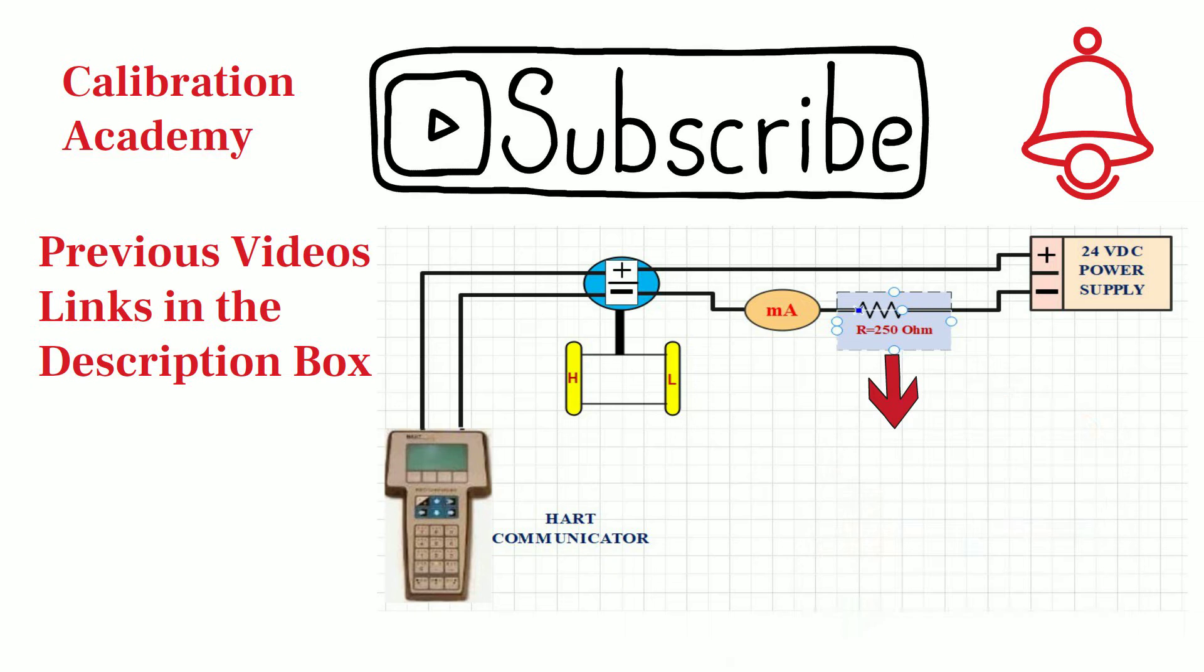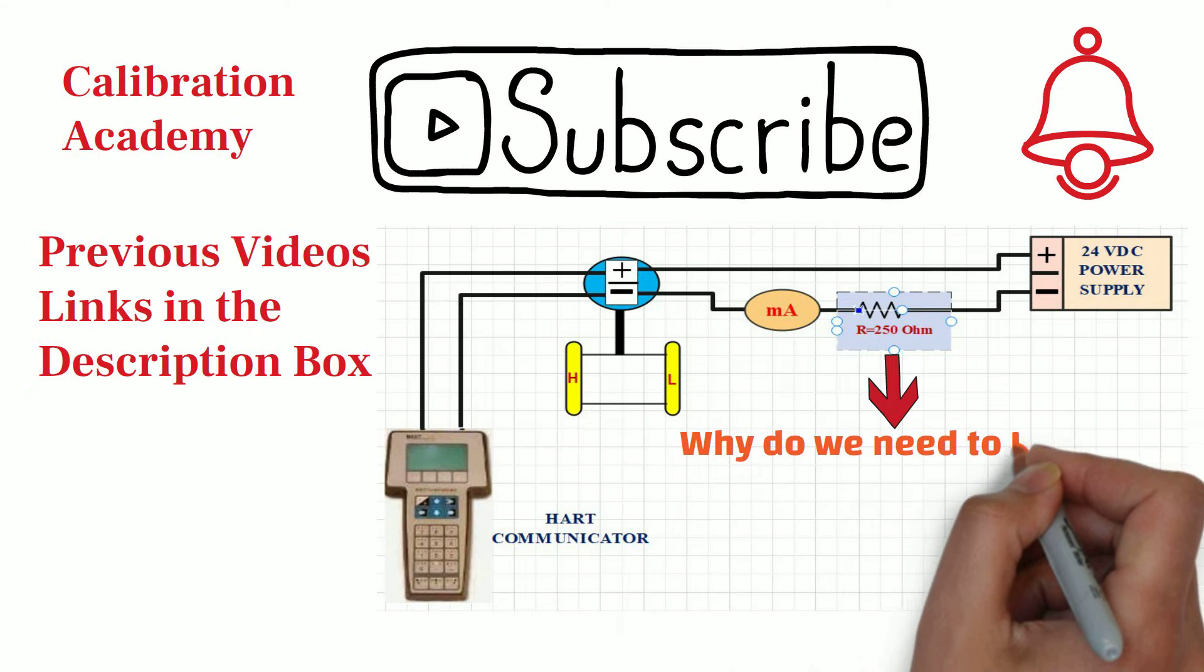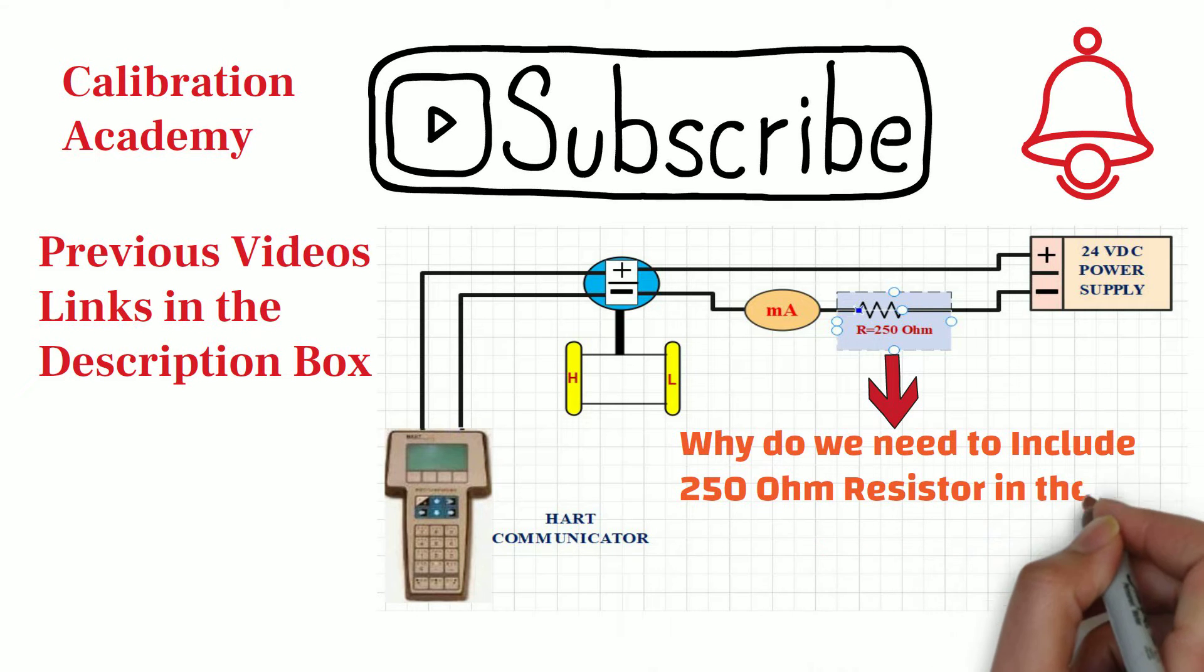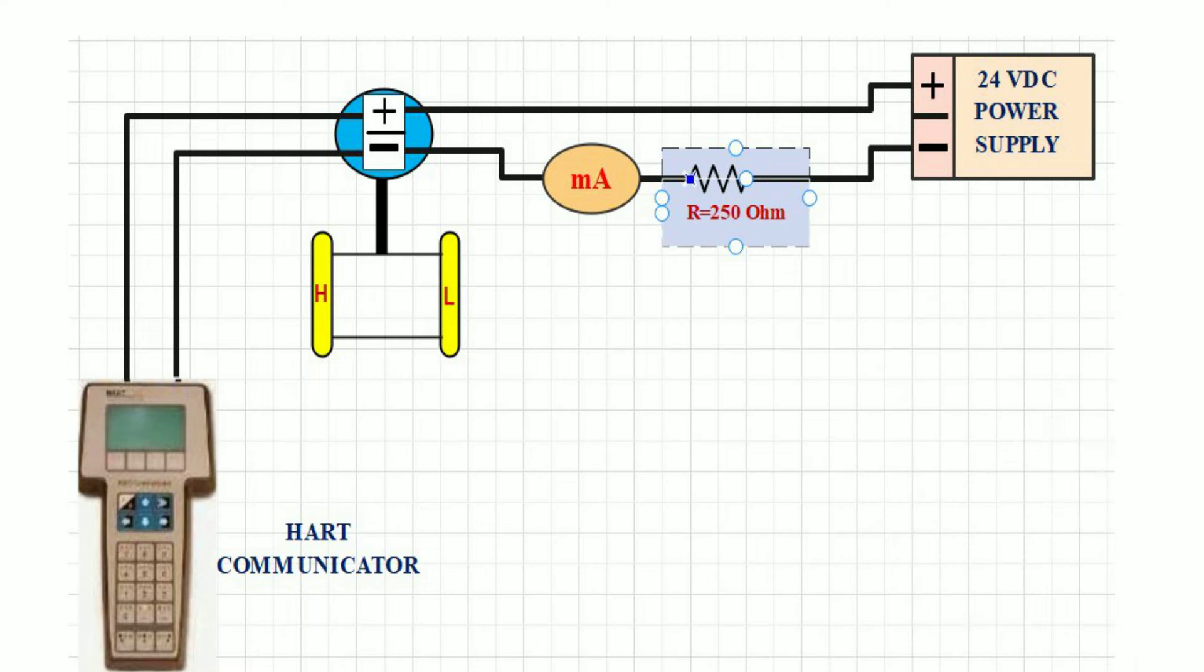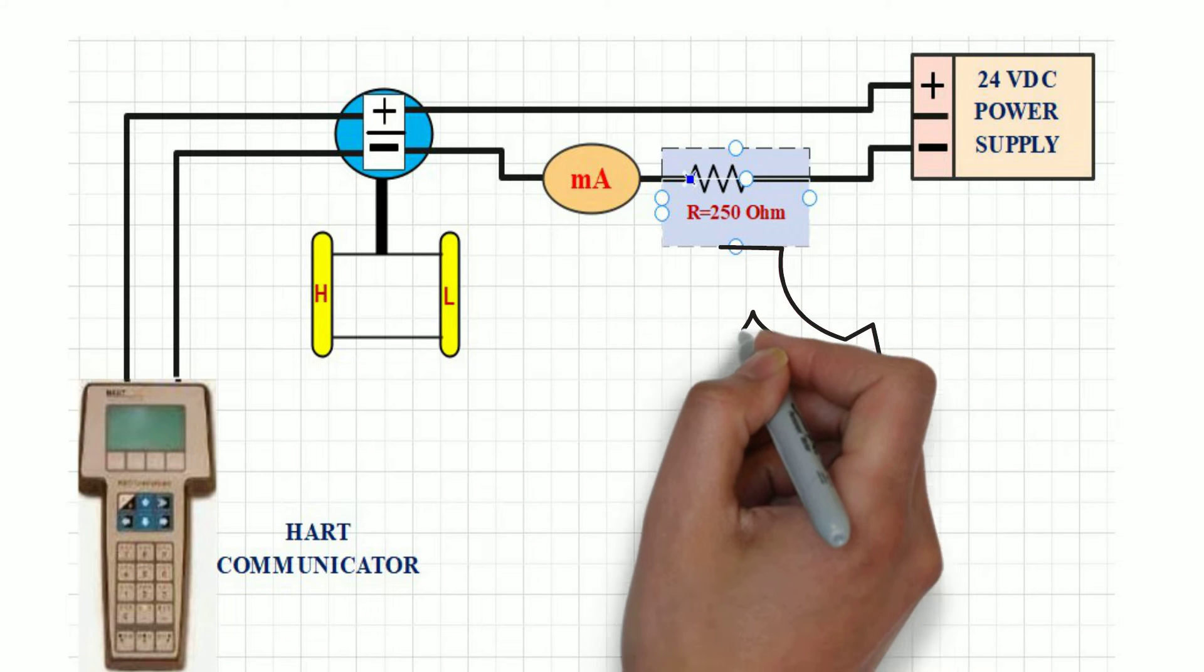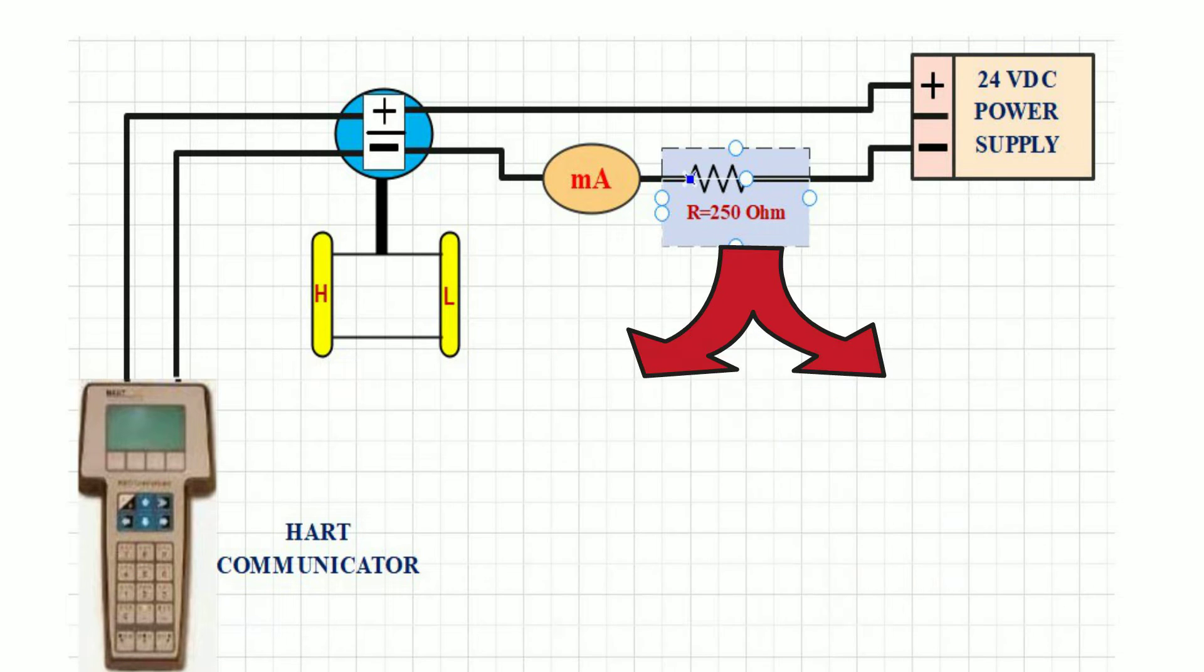This is a short video on why do we need to include 250 ohm resistor in the loop while using HART protocol. There are mainly two reasons to include 250 ohm resistor in the loop while using HART protocol.